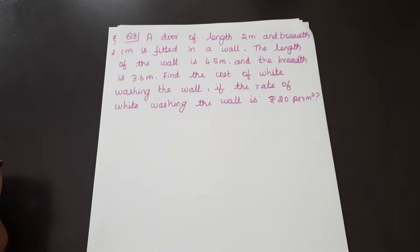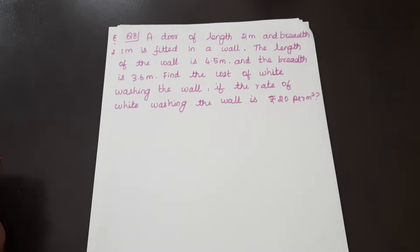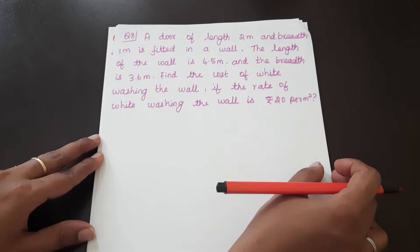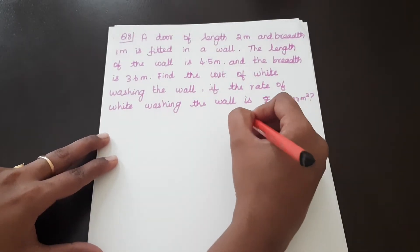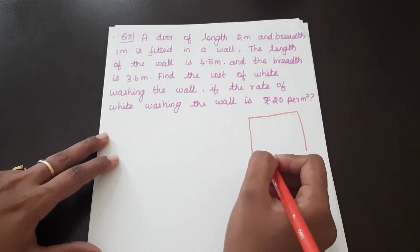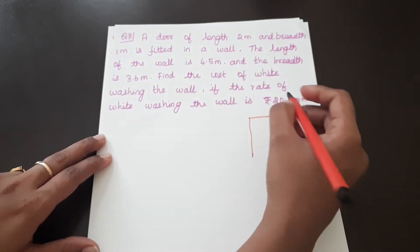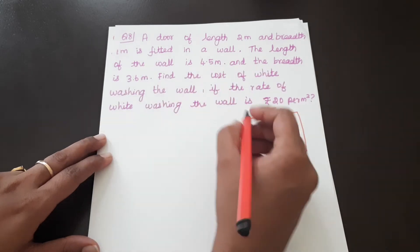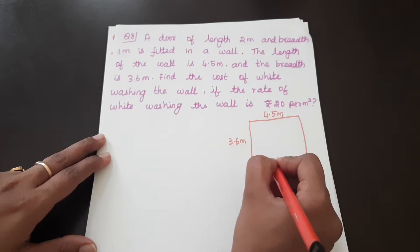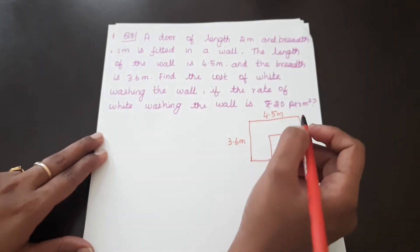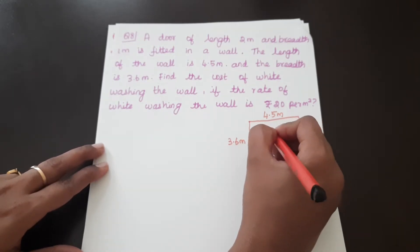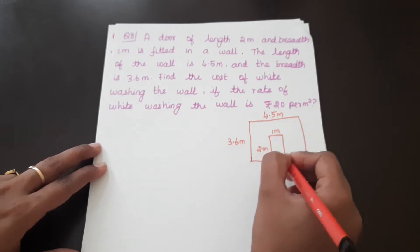Question number 8: a door of length 2 meters and breadth 1 meter is fitted in a wall. The length of the wall is 4.5 meters and the breadth is 3.6 meters. Find the cost of whitewashing the wall if the rate is rupees 20 per meter square. The door area will be excluded from the whitewash area.